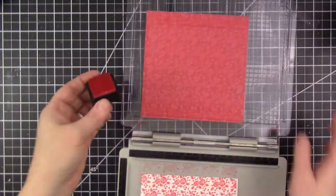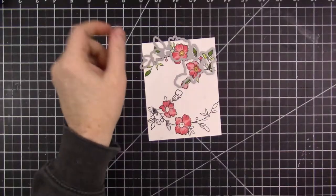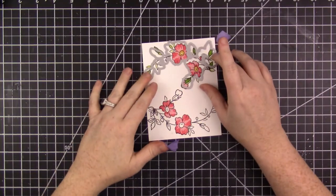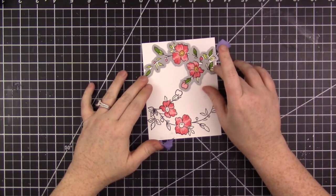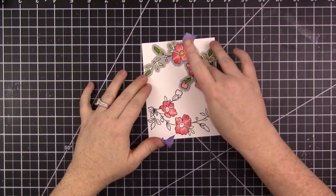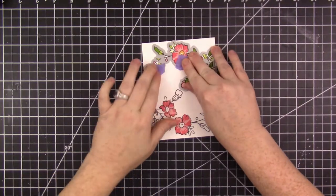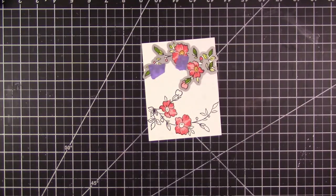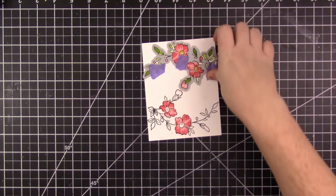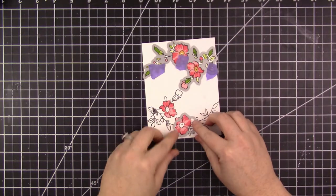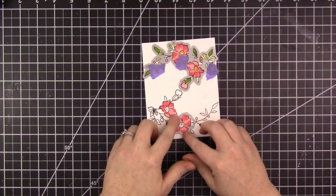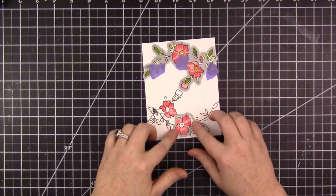This stamp set has coordinating dies, and I'll use them to cut out the images. The purple tape I use will hold the dies in place while I run it through my Vagabond die cutting machine. The purple tape is removable, so it won't damage the paper when I peel it off, but it's strong enough so that I can reuse each piece several times.